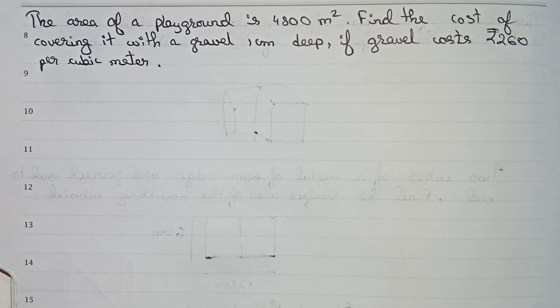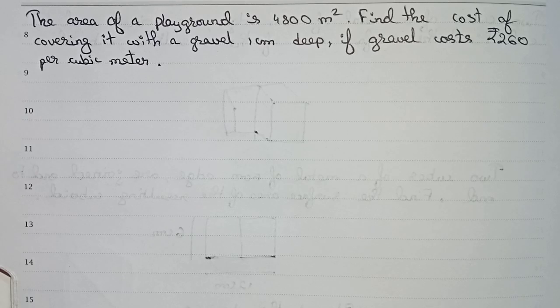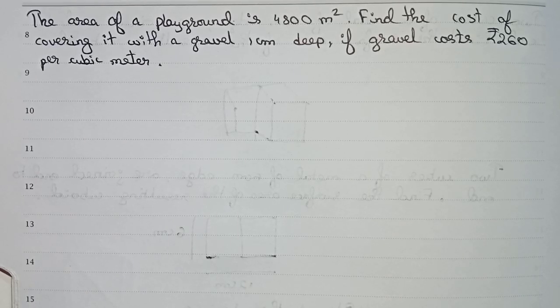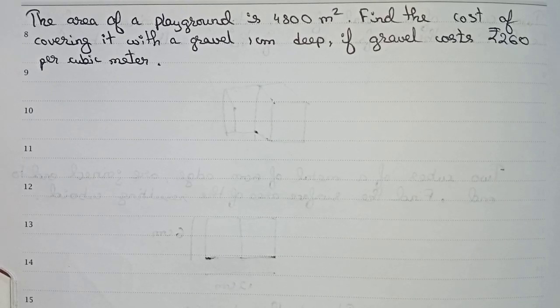Hello guys, welcome to this video. In this video our question is: The area of a playground is 4800 square meters. Find the cost of covering it with gravel 1 centimeter deep, if gravel costs 260 rupees per cubic meter.